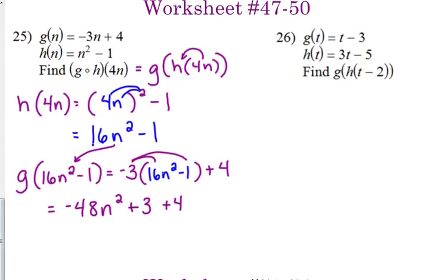So last step, we're going to combine those constants, negative 48n squared plus 7.